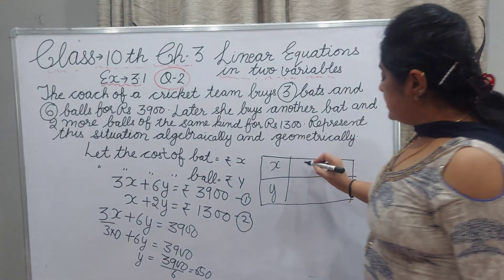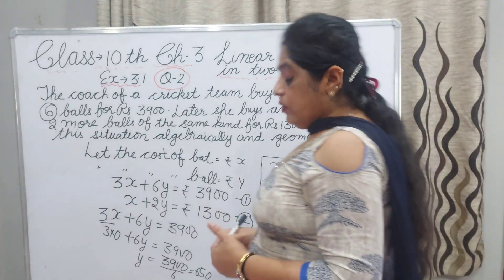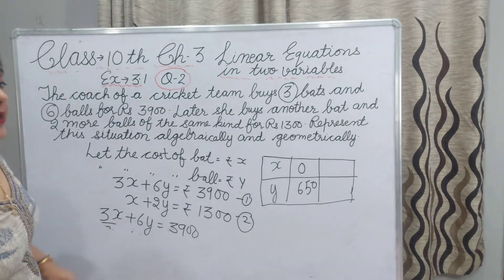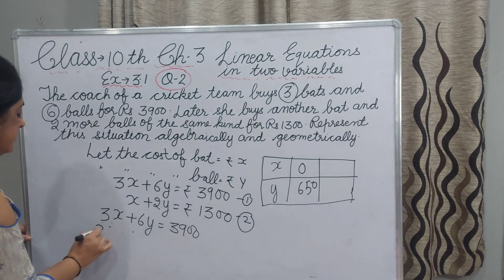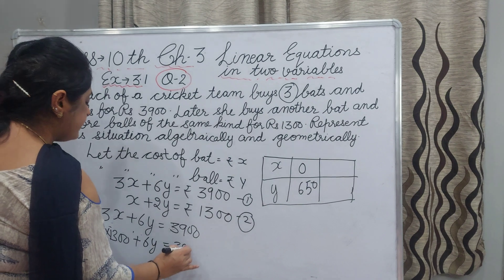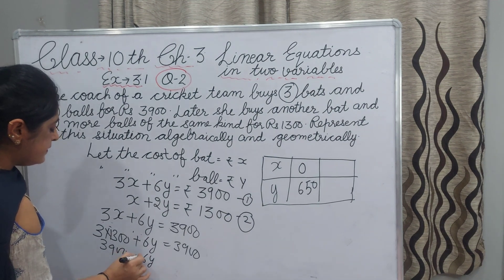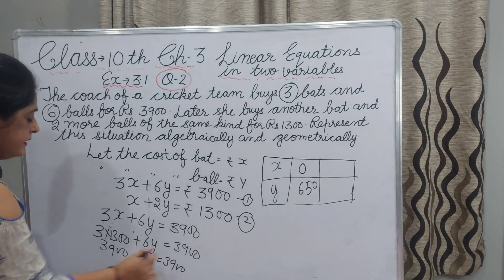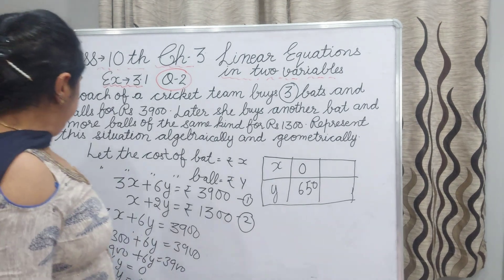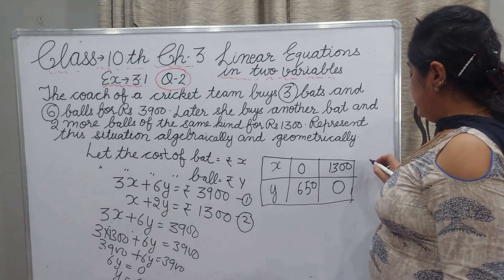So if X is 0, Y value is 650. Now taking another value of X: I take X equal to 1,300. Then 3 times 1,300 plus 6Y equals 3,900 — the 3,900 cancels, giving 6Y equal to 0, so Y equals 0. If X is 1,300, Y is 0. This completes our first table.